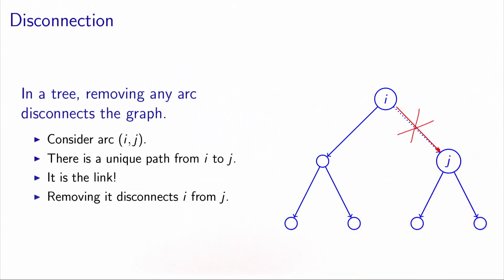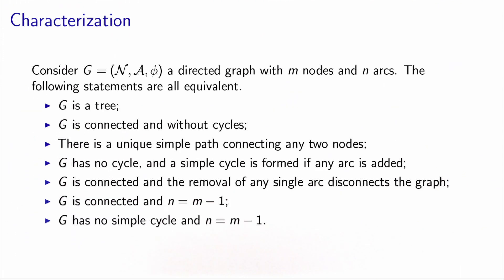So we have seen that a tree — which is a connected graph without cycle — is something very special: if you just add one arc, it's not a tree anymore because you create a cycle; and if you remove just one arc, it's not a tree anymore because you disconnect the graph. The properties that we have shown in this video are necessary conditions, but actually it can be shown that they are also sufficient. Therefore, we get a list of characterizations of a tree, and all the statements on these slides are equivalent.